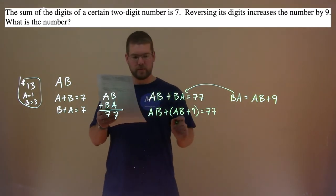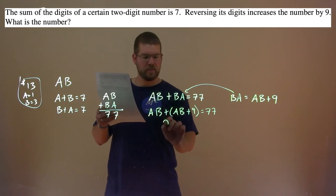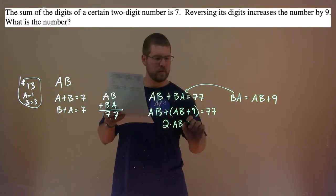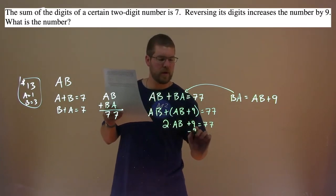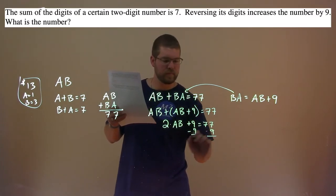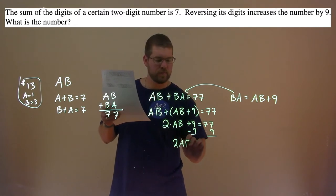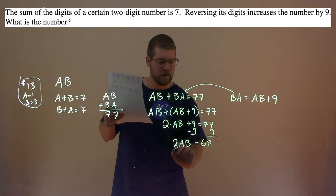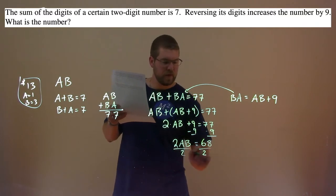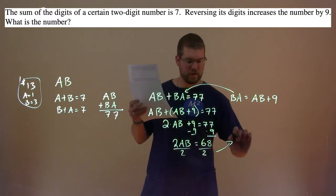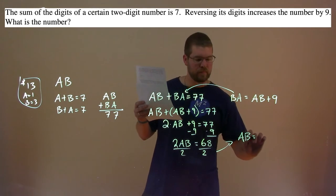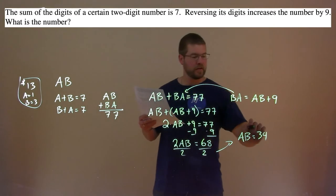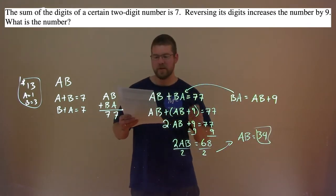Simplifying: A,B plus A,B is 2 times A,B, plus 9 equals 77. Subtract 9 from both sides: 2 times A,B equals 77 minus 9, which is 68. Divide both sides by 2, and A,B equals 34. So our two-digit number is 34.